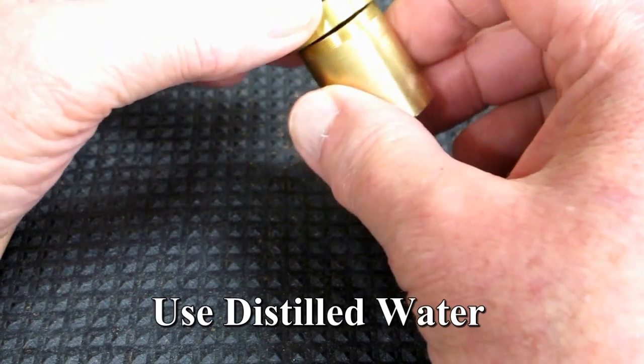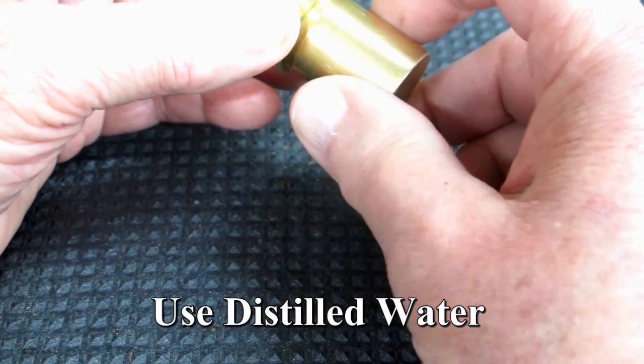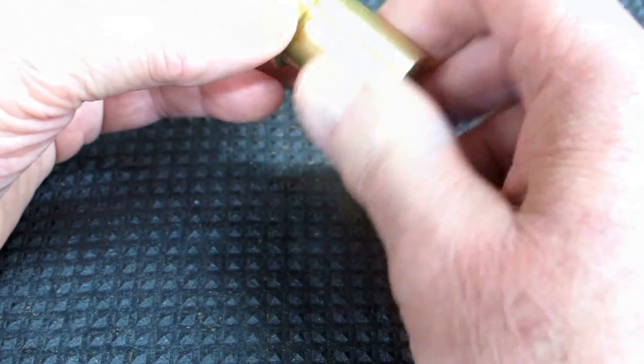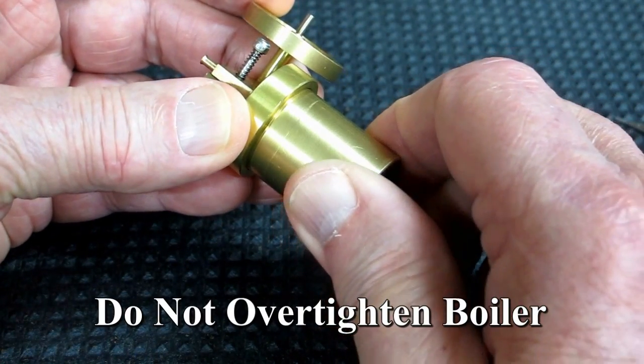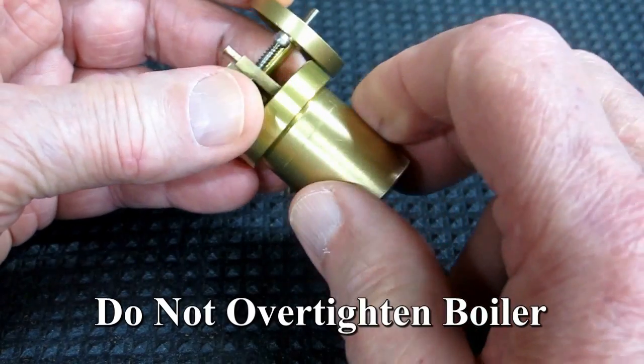And I use distilled water. It won't have any calcium or minerals in it that will cause this thing to scale up. I tighten this until I just touch that O-ring and then I give it about a quarter turn. That's plenty.